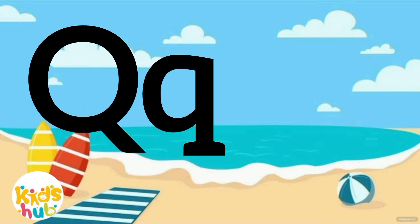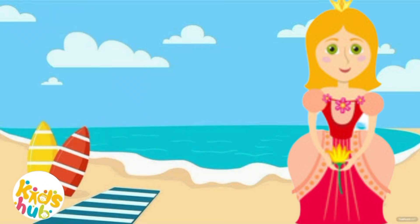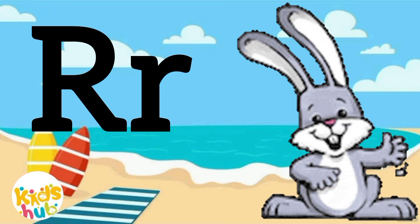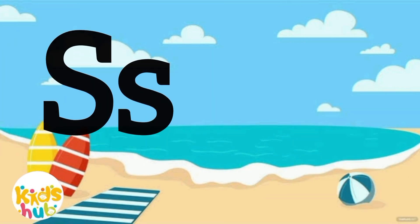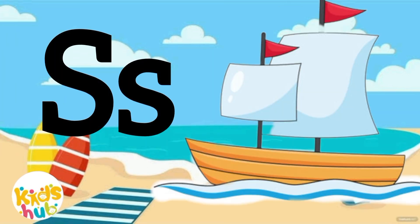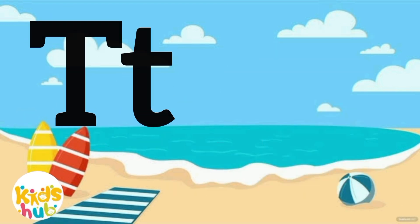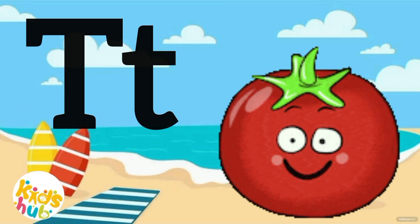Q is for queen, quick-quick-queen. R is for rabbit, r-r-r-rabbit. S is for ship, sh-sh-ship. T is for tomato, t-t-t-tomato.